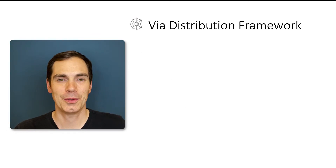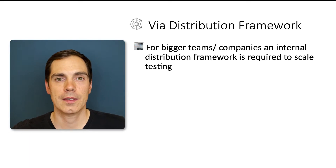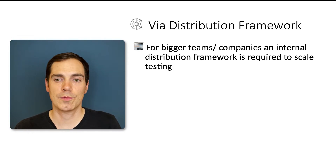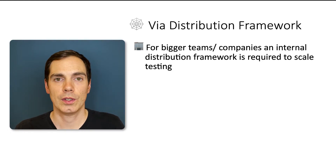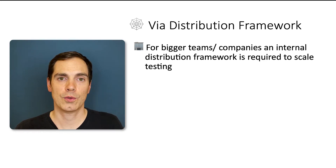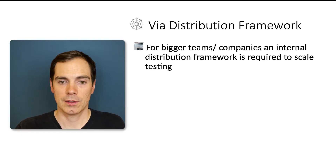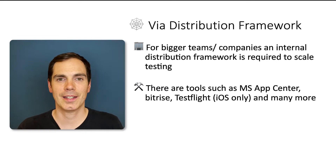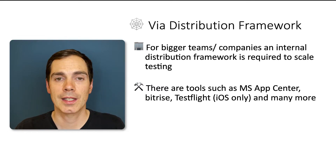But there are other ways to enable a beta testing community for your app. You can use so-called distribution frameworks. This is especially a use case for bigger teams or bigger companies that want to use an internal distribution framework to scale their testing activities. Let's assume you have a company with 10,000 colleagues and you'd like to invite them to a beta or alpha testing channel, but you don't want to add all 10,000 email addresses. You can set up a pipeline with tools such as Microsoft App Center, Bitrise, or TestFlight — though TestFlight is iOS only. There are many more products that can act as a distribution framework.